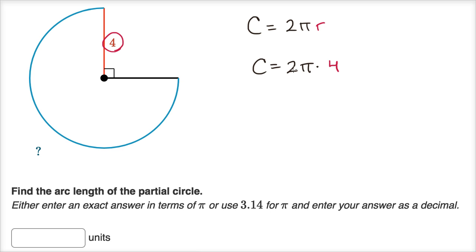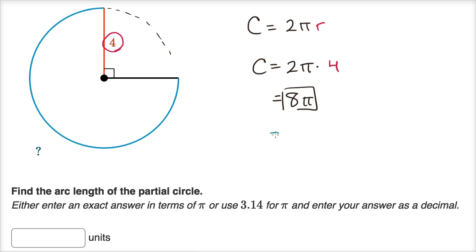We can just change the order in which we multiply, so it's two times four times pi, which is going to be equal to eight pi. Now that is the circumference of the entire circle. If we care about this arc length, it's going to be three fourths times the circumference of the entire circle — so three over four times eight pi.